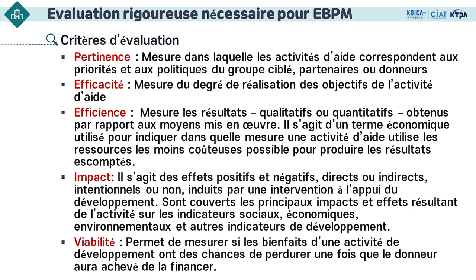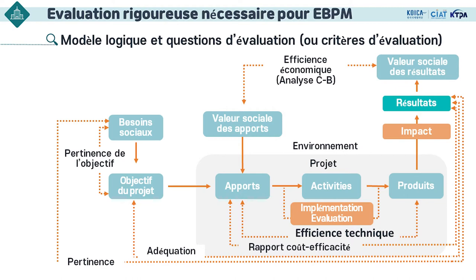Cette image concerne la théorie de politique expliquée pendant la deuxième session. Selon cette théorie, nous avons besoin de buts, de politiques et de plusieurs inputs, et nous espérons obtenir l'outcome comme conséquence. Le but, l'input et l'outcome doivent être corrélatifs. La flèche sur l'image signifie la corrélation entre ces éléments. L'évaluation est d'examiner chaque flèche, à savoir la corrélation entre les éléments. Les critères de l'évaluation nous permettent d'examiner si ces flèches relient pratiquement les éléments les uns aux autres.